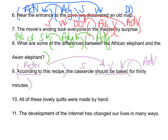'All of these lovely quilts were made by hand.' 'Of these lovely quilts' and 'by hand' are both prepositional phrases. The verb is 'were made'; what was made? All. 'Of these lovely quilts' modifies 'all,' a pronoun: adjective phrase. 'Were made by hand' — by hand modifies the verb: adverbial phrase.